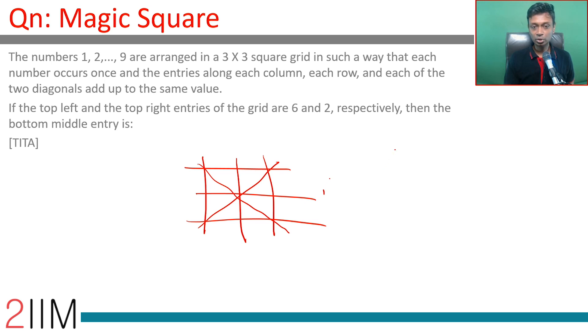The top left and top right entries of the grid are 6 and 2 respectively. Then the bottom middle entry is? To start with, 1 to 9 are all distributed. The total of all this should be 9 into 10 by 2, which is 45. Each row adds up to the same number. Three rows make up the whole grid, so the sum has got to be 15.